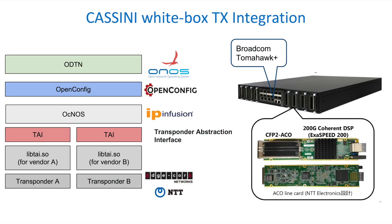Here you can see the hardware and software stack with ONOS as the SDN controller, OpenConfig as the API between ONOS and the Cassini device, OCNOS as the device system exposing OpenConfig through Netconf on the northbound and translating those models into TIE calls with the library for the CFP2-ACO line card created in collaboration between NTT and Oclaro.